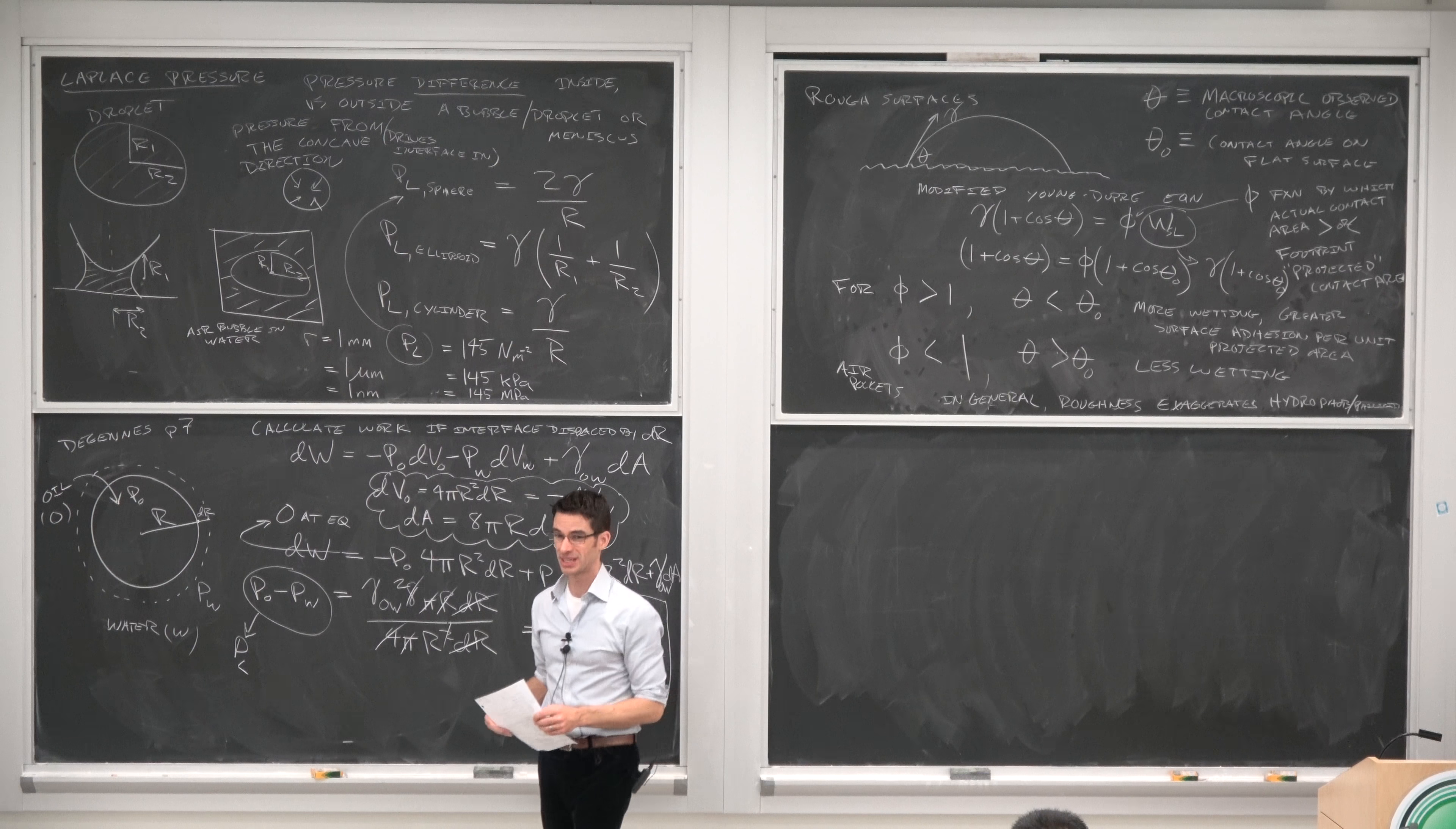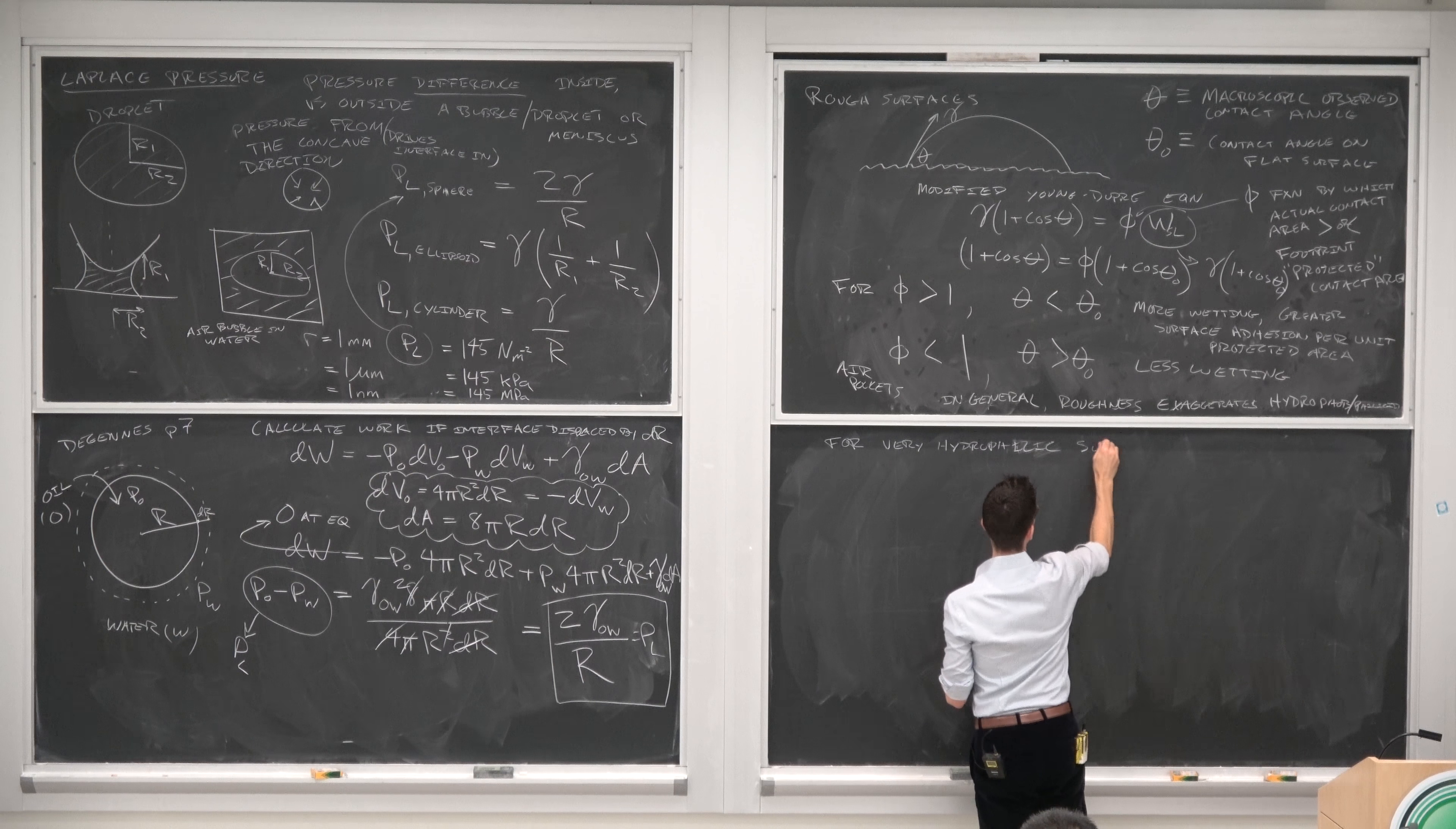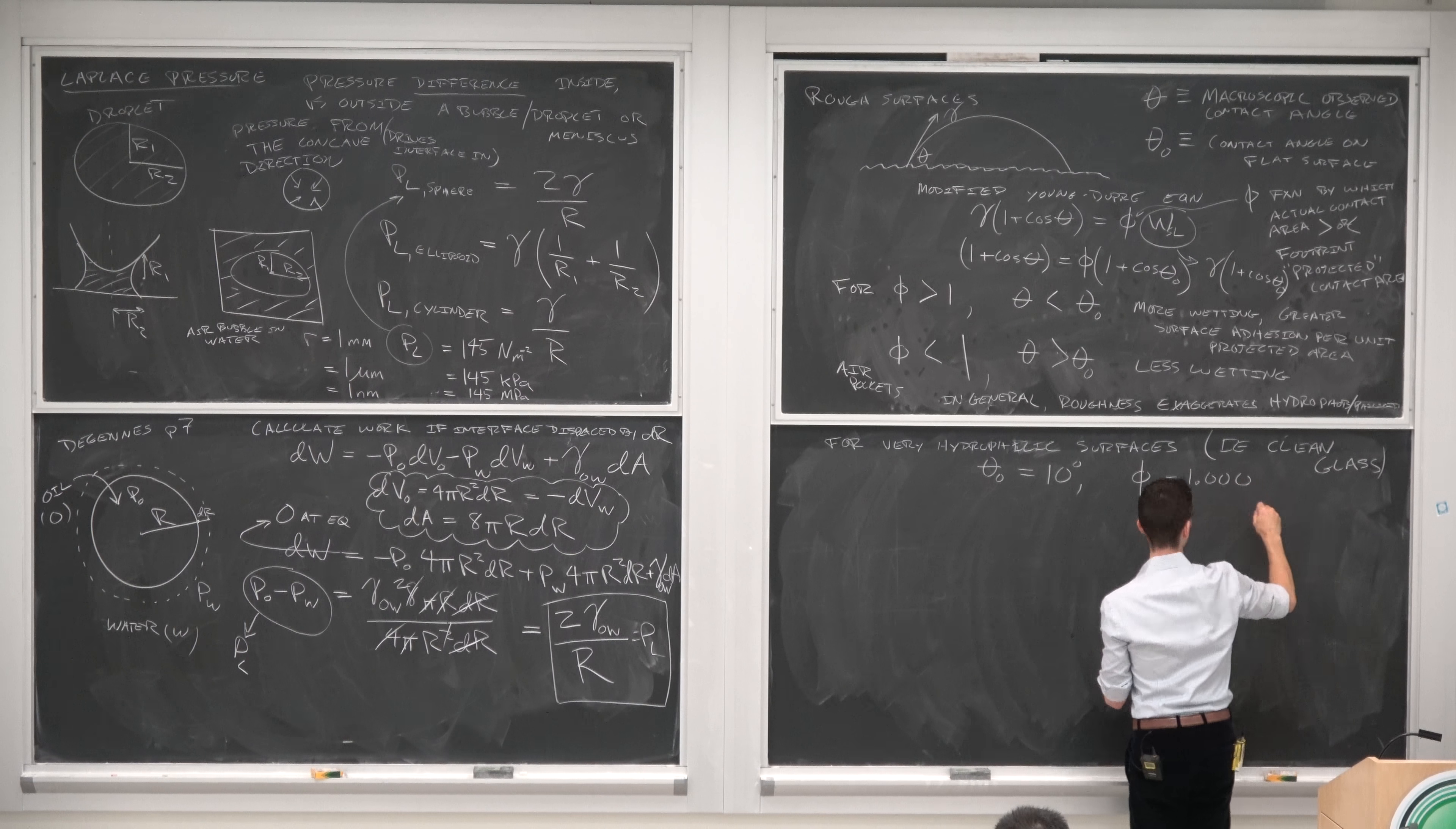It actually doesn't take that much more integrated contact area to really change the macroscopic behavior. So for example, for very hydrophilic surfaces, if our contact angle on a flat surface is 10 degrees, that's pretty hydrophilic, and our integrated contact area is 1.000 because we like significant figures, then our observed contact angle is just going to be the same.